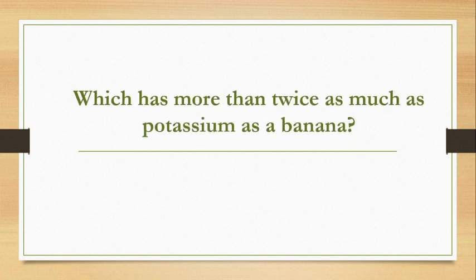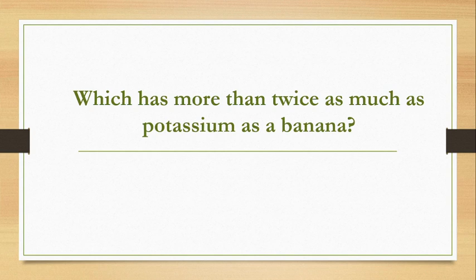Which has more than twice as much potassium as a banana? The answer is avocado. Avocado has more than twice as much potassium as a banana.